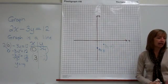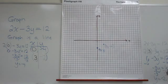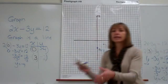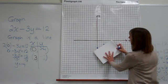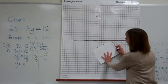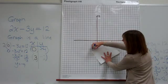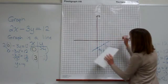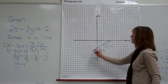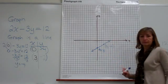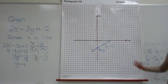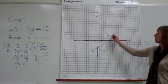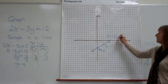So then to graph my line, since I know it is a line, I can just take those two points, get a straight edge, line it up where those two points are, and draw the graph of all the ordered pairs that make that equation true. So here's the graph of my line, 2x minus 3y is equal to 12.